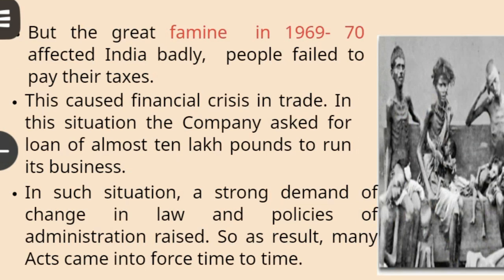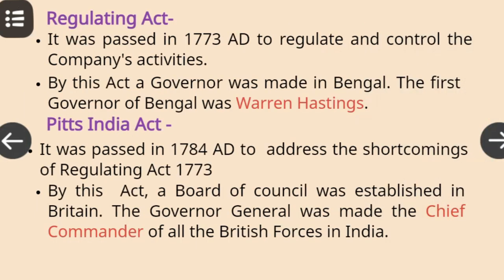Gradually, the company officials became corrupt. They started taking money from the Nawabs and kings, and they also started interfering in the political and social affairs of Indians. But when the Great Famine of 1769-70 affected India badly, people failed to pay their taxes. This caused a financial crisis in trade, and the company asked for a loan of almost 10 lakh pounds to run its business.